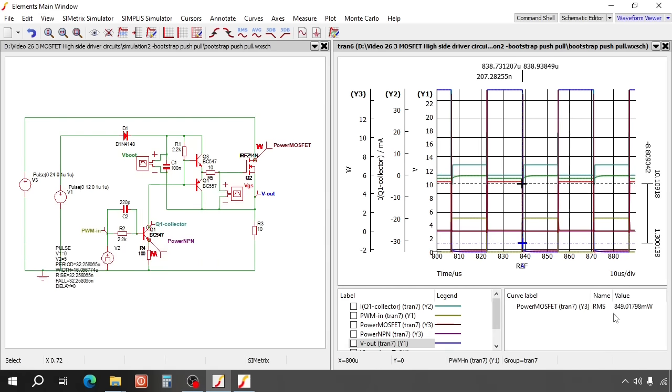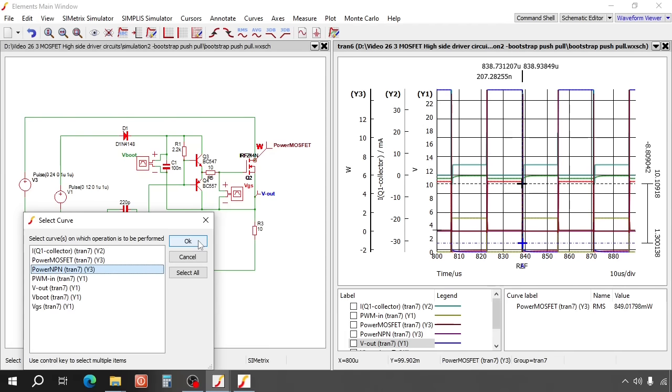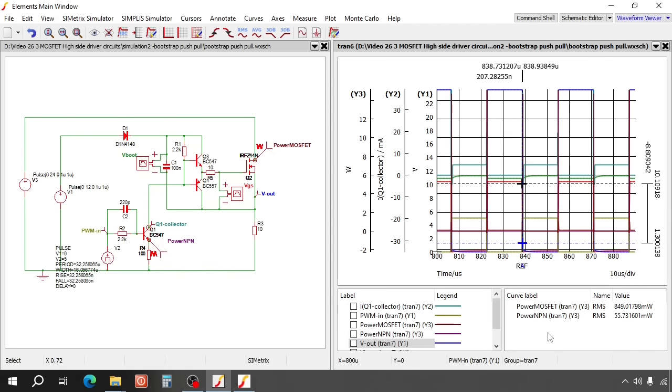Now let's check the power loss. The MOSFET has a power loss of 850 milliwatt. So at 60 Kelvin per watt, this MOSFET will be about 76 degrees. Now let's check the transistor. 55 milliwatt. That is really very low. This transistor will be about 35 degrees at room temperature. So this circuit works much better than the previous one. Now let's build it and check the performance in real life.